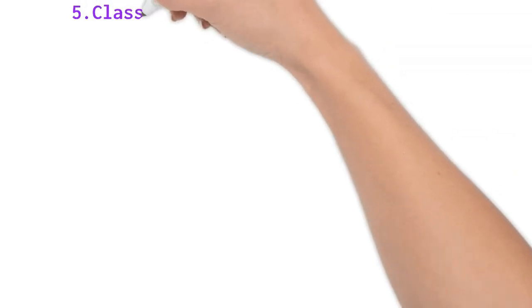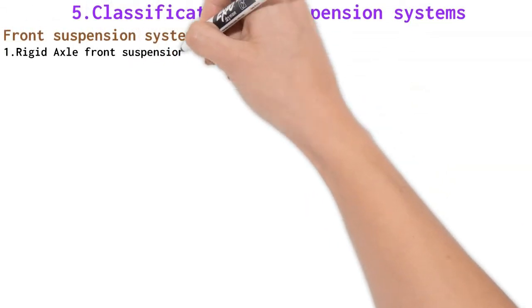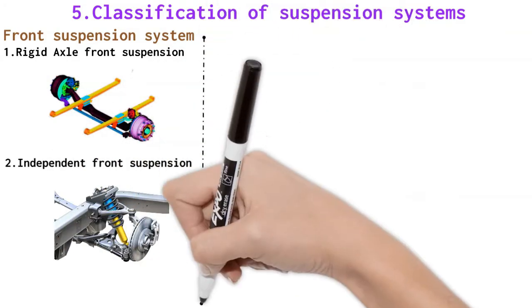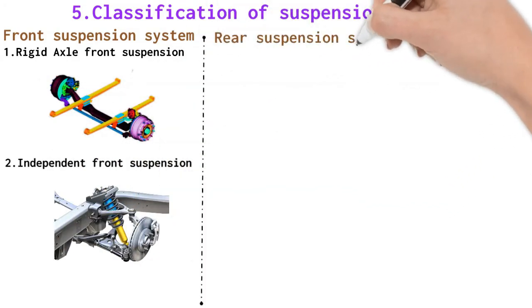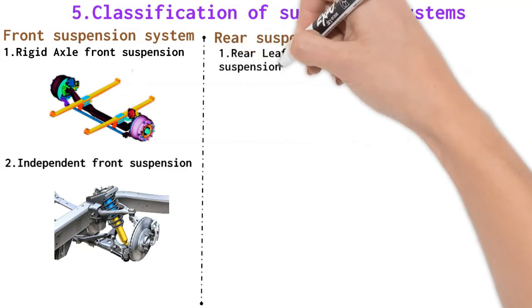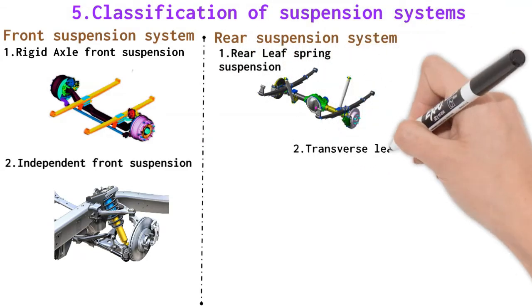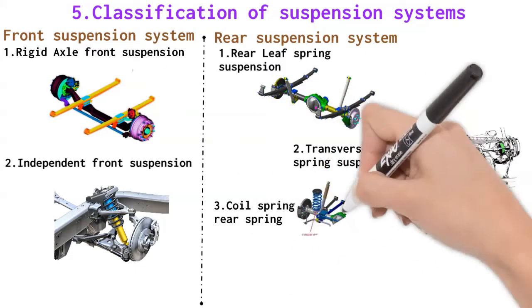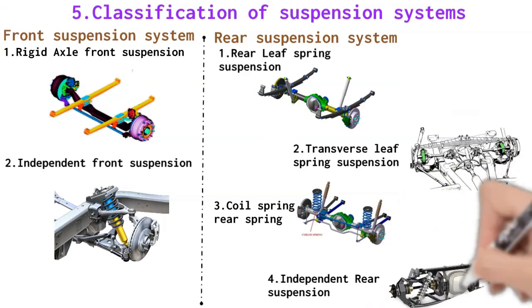Classification of suspension systems. Based on the location of the suspension system in the vehicle, suspension systems are classified as follows. Front suspension has mainly two types: rigid axle front suspension and independent front suspension. Rear suspension has mainly four types: rear leaf spring suspension, transverse leaf spring suspension, coil spring rear suspension, and independent rear suspension.